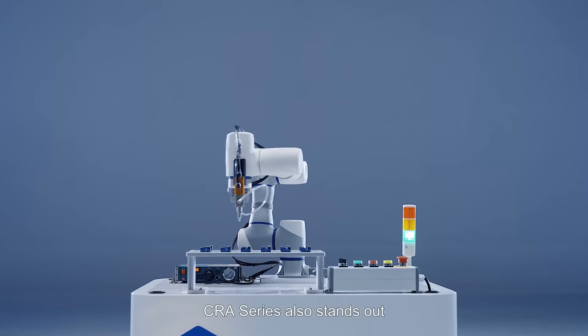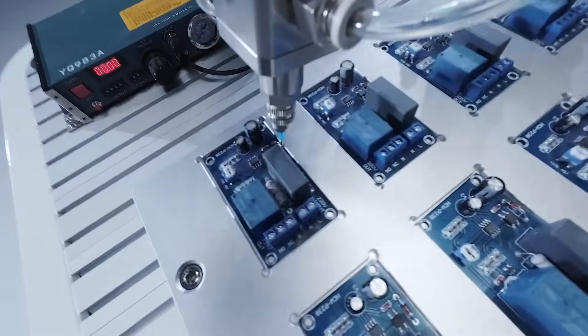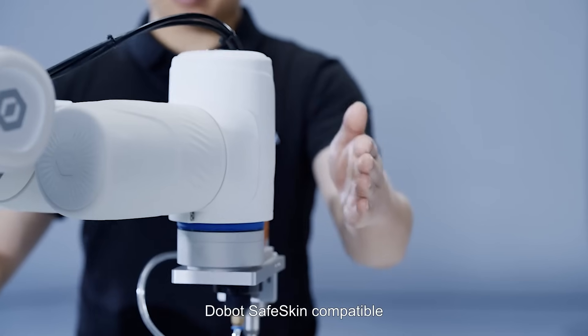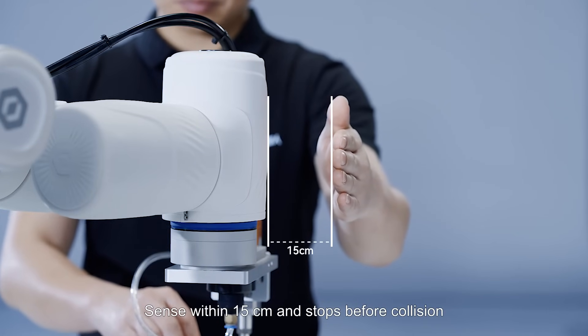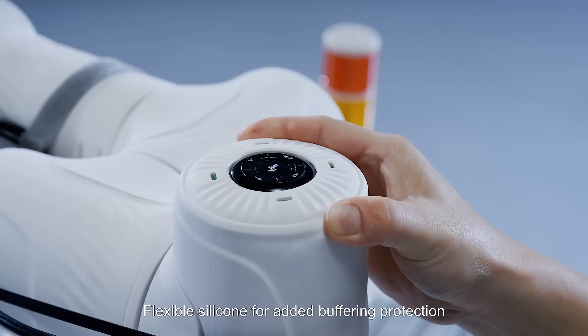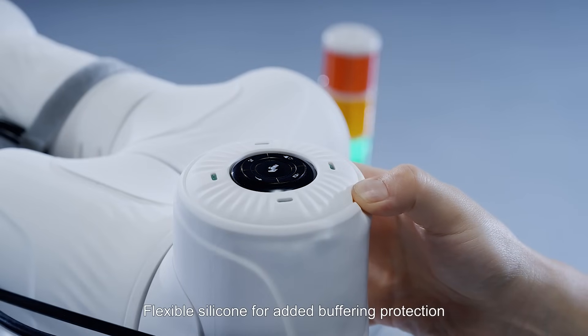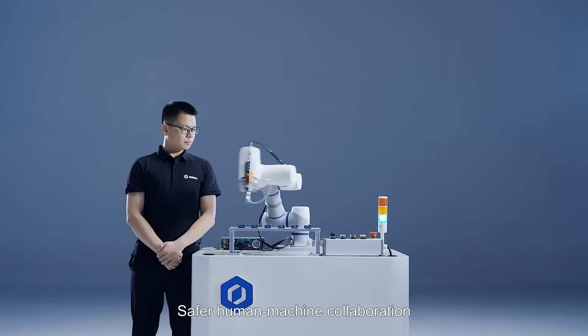In terms of safety, CRA series also stands out. Dobot safe skin compatible sense within 15 centimeters and stops before collision. Flexible silicone for added buffering protection. Safer human-machine collaboration.